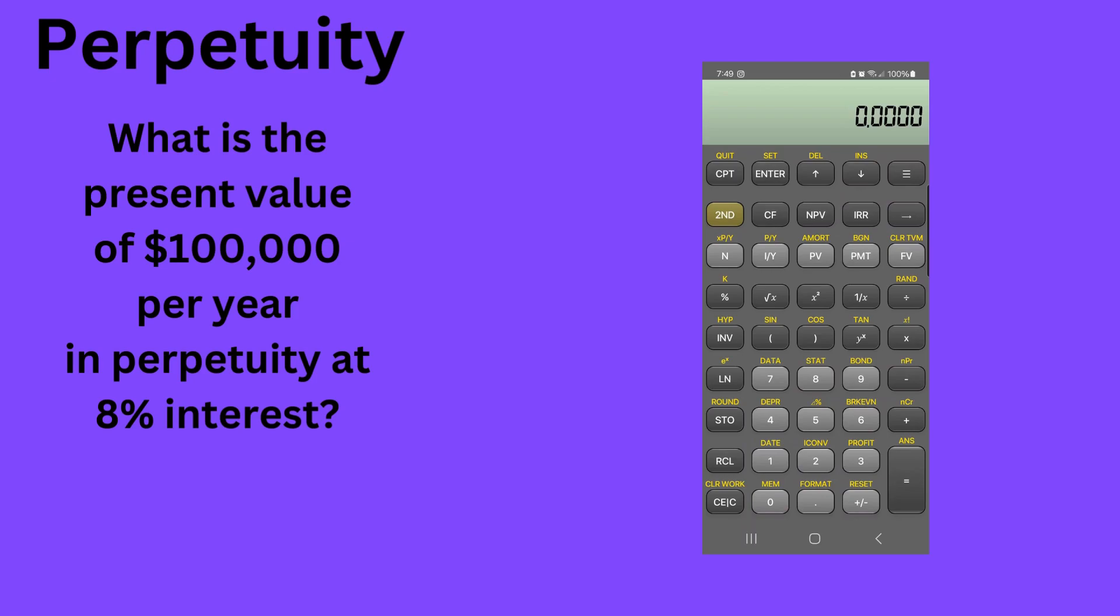So you're probably asking the question, well how do we do this? There's only two variables, where do we enter this stuff in our financial calculator? And the quick answer is you don't. You could do this problem with a four function calculator, it's no big deal at all.